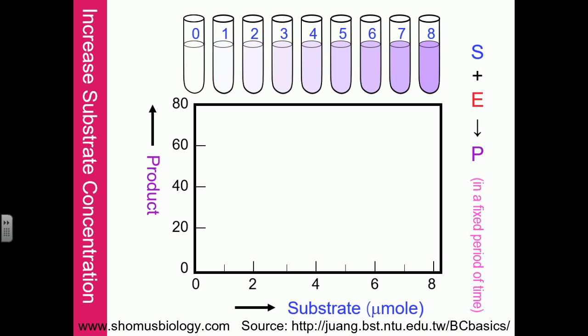The results show that as substrate concentration increases, the reaction proceeds more quickly. Different substrate concentrations yield different amounts of product. We continuously increase the substrate concentration to see the amount of product formed, and we find that initially they react more quickly as substrate concentration increases.